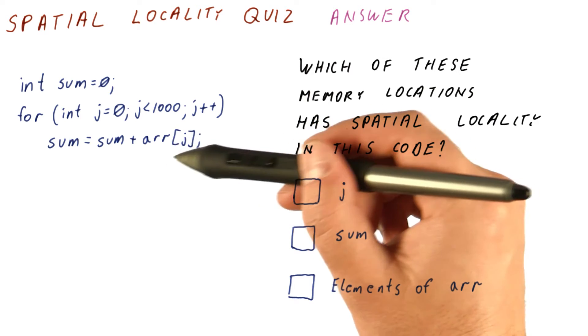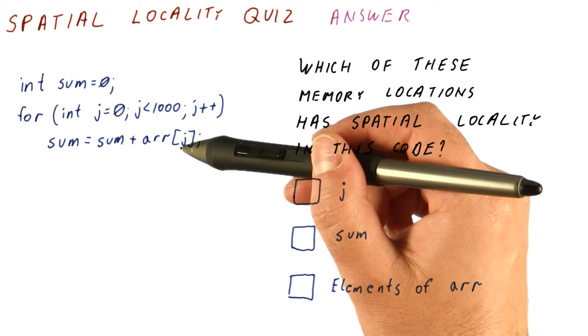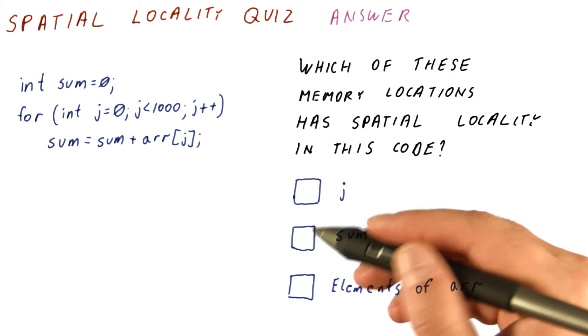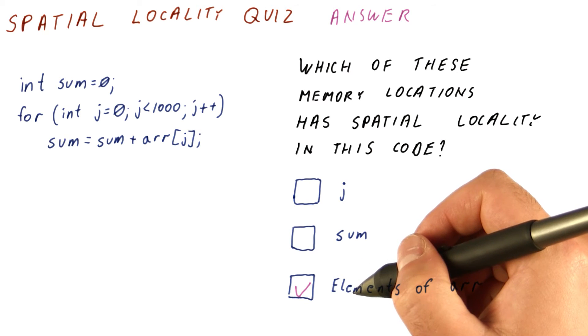So it is true that once we access a memory location in this array, we are likely to access nearby locations soon. This variable definitely has spatial locality.